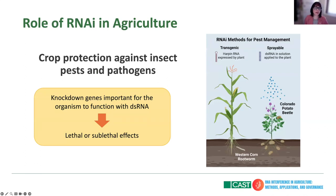What is the role of RNAi in agriculture? There are multiple roles, but one of the biggest in recent years is crop protection against insects, pests, and pathogens. This is being explored both as a transgenic approach — expressed by the plant — and in a sprayable form. Basically, what we do is knock down genes that are important for the organism to function with double-stranded RNA, and these generate lethal or sublethal effects that protect the crop.